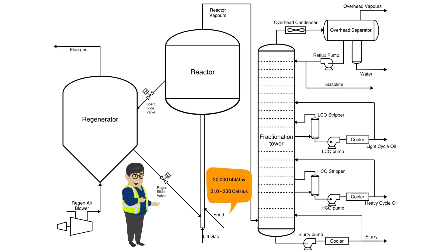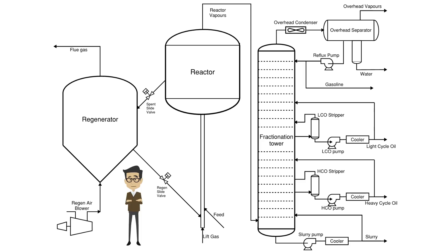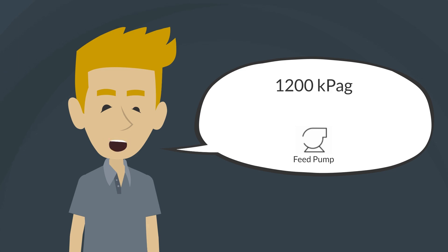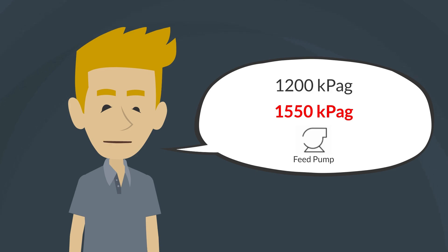It enters the reactor around 210 to 230 degrees Celsius. Do we have any information on the pumps that feed the unit? The feed pumps normally discharge around 1,200 kPaG but can generate up to 1,550 kPaG when deadheaded.